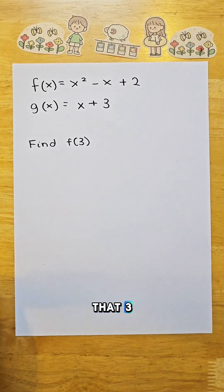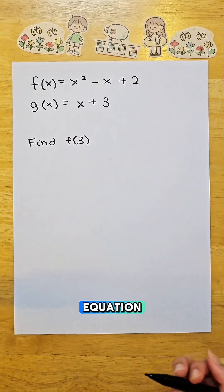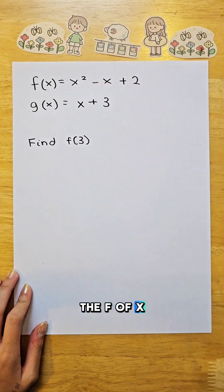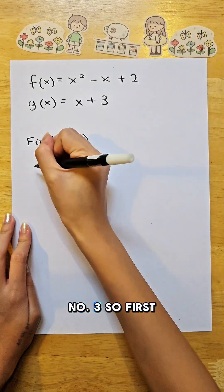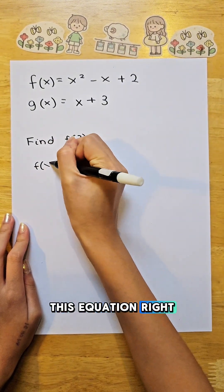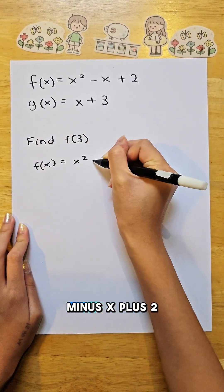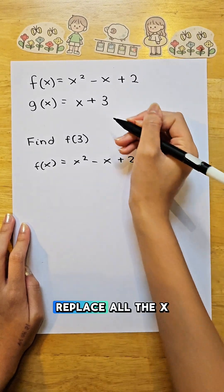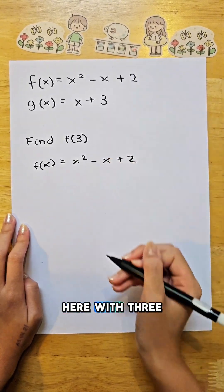Now, we can see here that 3 replaces x in the f of x equation. So it means we have to replace all the x in the f of x equation with number 3. So first, we have this equation, right? f of x equals x squared minus x plus 2. Replace all the x here with 3.